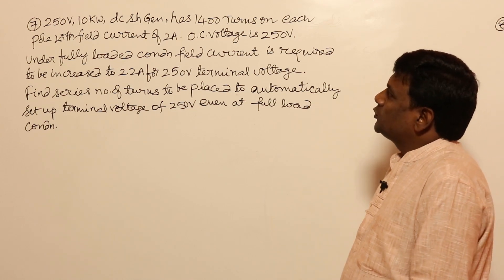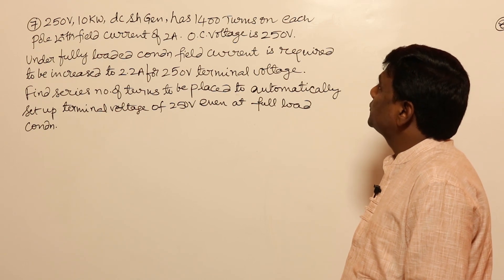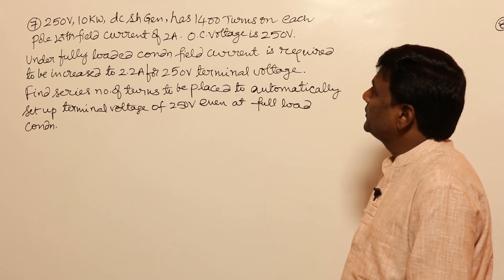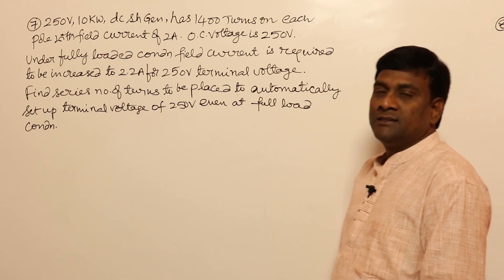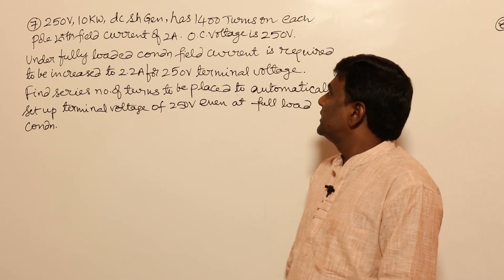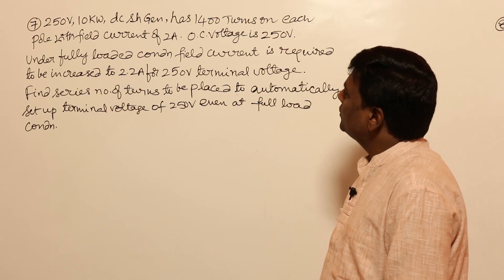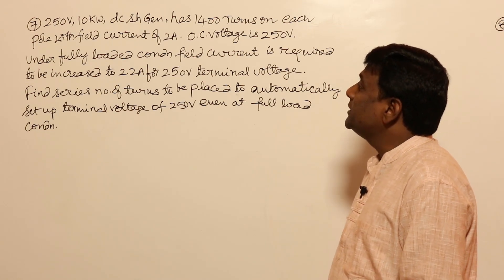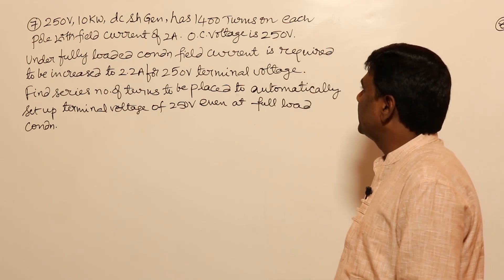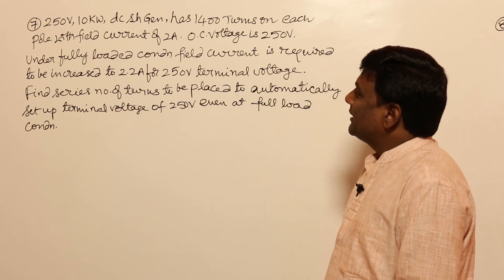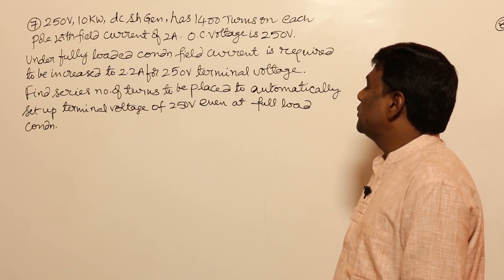In this question, a 250 volts 10 kilowatt DC shunt generator has 1400 turns on each pole. With a field current of 2 amperes, the open circuit voltage is 250 volts. Under open circuit conditions, the voltage developed inside the machine is 250 volts. Under fully loaded conditions, field current needs to be increased to 2.2 amperes to get the same terminal voltage. Find the number of series turns to automatically set up the terminal voltage of 250 volts even at full load.